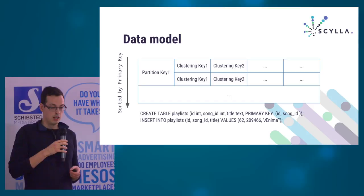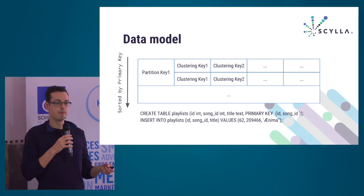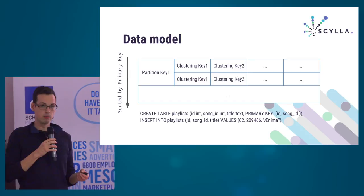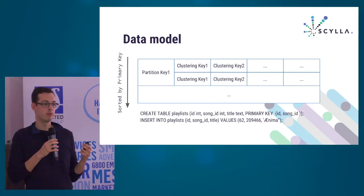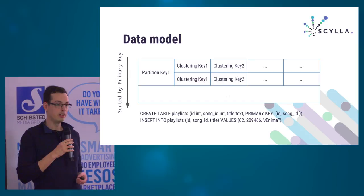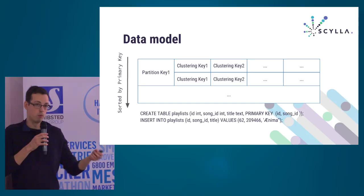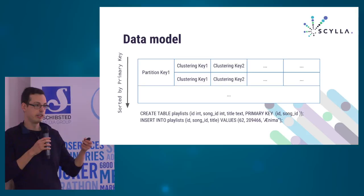As for the data model, it's structured data — not just simply a key-value store. You can have a table where the columns have a particular type, and the rows are identified by a primary key. The primary key is composed of one or more partition keys and one or more clustering keys. The partition key is what is used to select the node that stores and handles that particular row. The clustering key defines the ordering of the rows as they are laid out on disk.